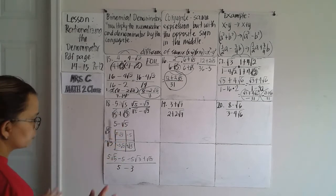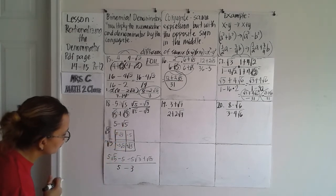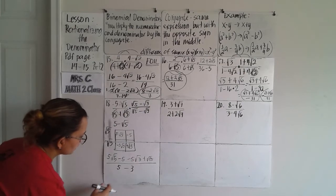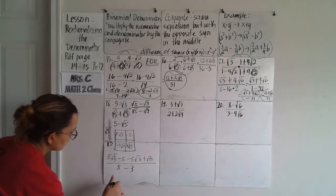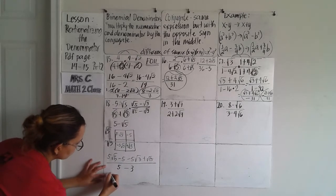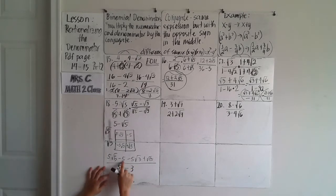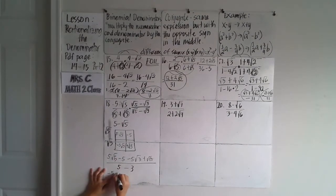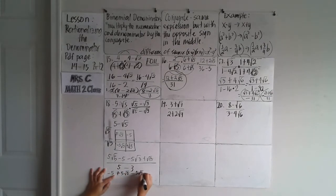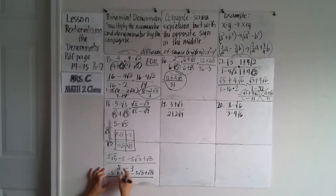Since these are all unlike radicals, we leave the numerator as is. For the denominator using difference of squares: square root of five squared is five, square root of three squared is three, so five minus three equals two. Rearranging the numerator, the final answer is negative five plus five square root of five minus five square root of three plus square root of fifteen, all over two.